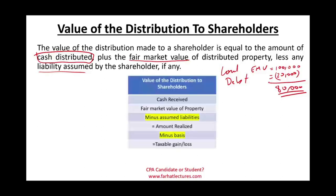How are you taxable? You take the cash received — for example, $10,000 in cash plus $100,000 in fair market value of property, minus a $10,000 liability attached to that property. The total amount realized is $100,000. You then compare that to your basis to determine your taxable gain or loss. Let's apply this to our prior example.